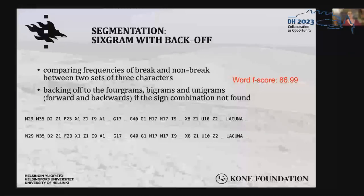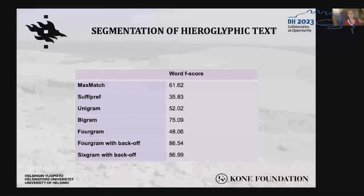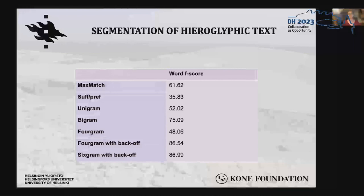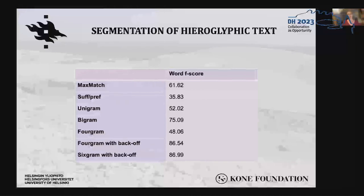Starting from 6-grams and backing off to 4-grams and so on increased the word F-score only slightly more. Our back-off method works fairly well, but one must remember that our test set was in-domain. Since we plan to use segmentation as a pre-processing step before automated transliteration, we need a much better method. Although we are skeptical because of the small size of our training data, we are planning to test deep learning methods that have recently been successfully used on Akkadian cuneiform texts by another team. But Akkadian cuneiform is very different, so if anyone has any suggestions on what method might work with this kind of text, we would love to hear.